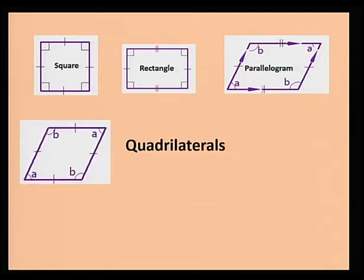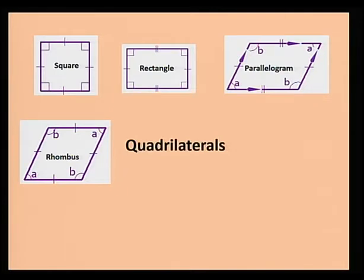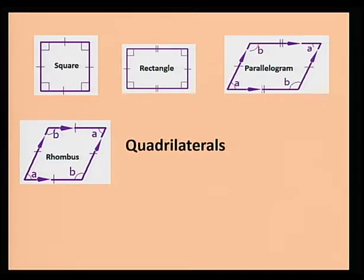This figure is called a rhombus. A rhombus is none other than a parallelogram with four equal sides. Since a rhombus is a parallelogram, it retains the characteristics of the parallelogram — that is, two pairs of parallel sides and two pairs of opposite angles. The angles A are equal and the angles B are equal.